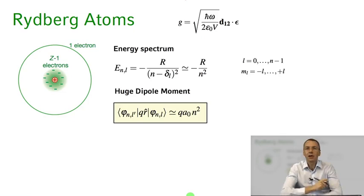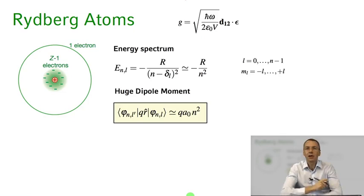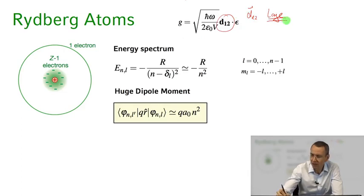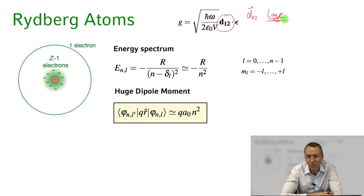Besides reducing mode volume, what else can we do to achieve strong interaction between the light field and an atom? The coupling constant is not only determined by the mode volume but also by the dipole matrix element D12, so if we can make D12 large we will also get a very large coupling between the atom and our radiation mode.